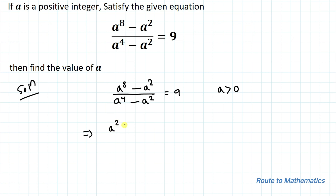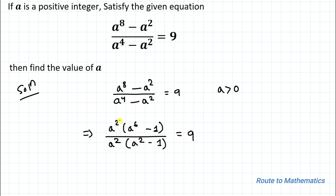By taking a² common from the numerator, we have a⁶ minus 1. Taking a² common from the denominator as well, we have a² minus 1 equals 9. The a² terms get cancelled out.